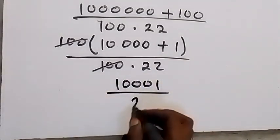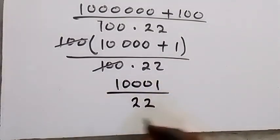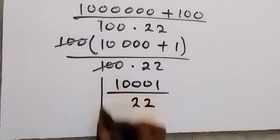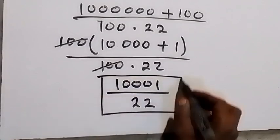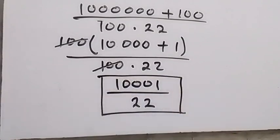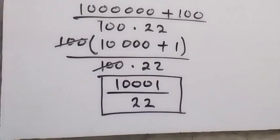So the simplified form of the expression is 10,001 divided by 22. Thank you for watching. Please share this video, give a thumbs up, and subscribe to my channel. See you in the next class, bye for now.